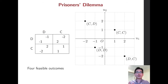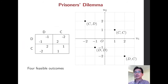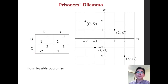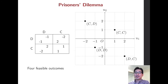Let's start with the prisoner's dilemma situation again. This game consists of two players, player 1 and player 2. Each player has two actions: D for defect and C for cooperate. In this payoff matrix, the combinations of their actions — DD, DC, CD, and CC — are four different feasible outcomes.